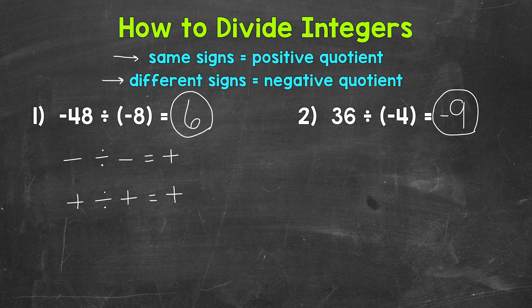So for different signs, that means a positive divided by a negative, like number 2, that equals a negative. And then a negative divided by a positive equals a negative.